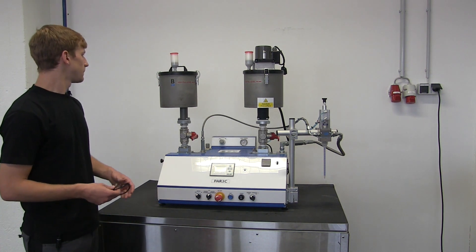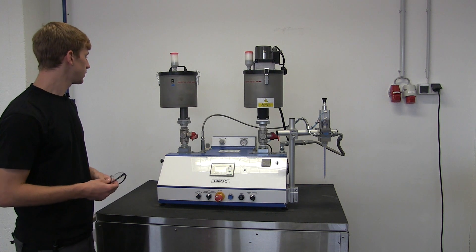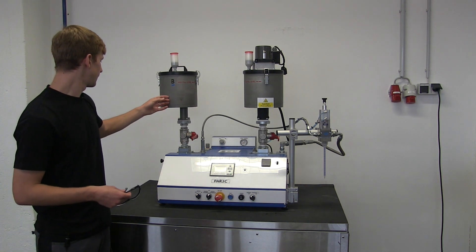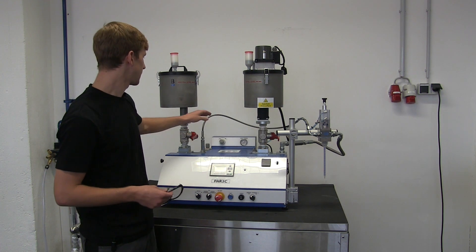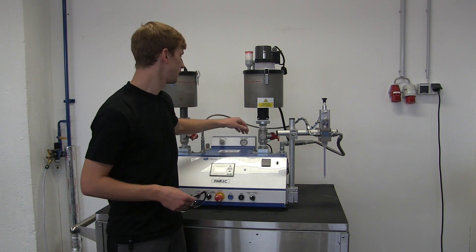You can also see the component A and B tanks, which are located directly on the piston pumps. They feed the A and B component materials separately to the valve.